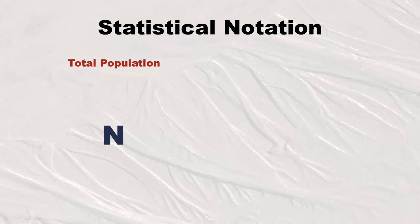A shout-out to statistical notation: when you see a capital N — like N equals 25 — you can assume that 25 refers to a population size. However, if you see a lowercase n equals 25, you can assume this is a sample of the population. It's a kind of secret code. When someone says 'n' verbally, you can't tell if they mean uppercase or lowercase, so you won't know if they're talking about a population or a sample.